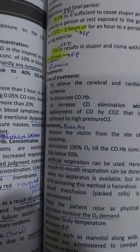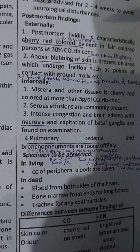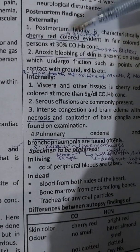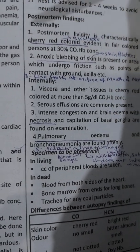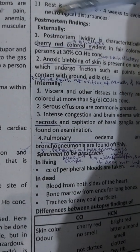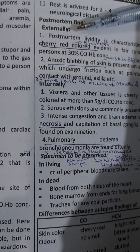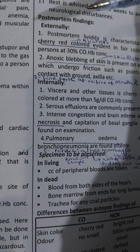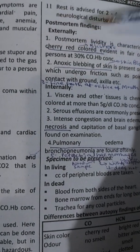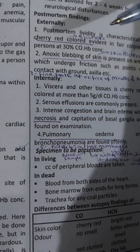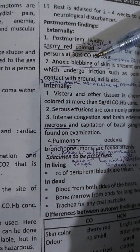If we talk about post-mortem findings, you will see cherry red blisters. Cherry red color is a characteristic finding in post-mortem lividity — that is an external finding. You will also see hypostasis, anoxic blistering of the skin, and mouth and nose orifices showing fine froth.